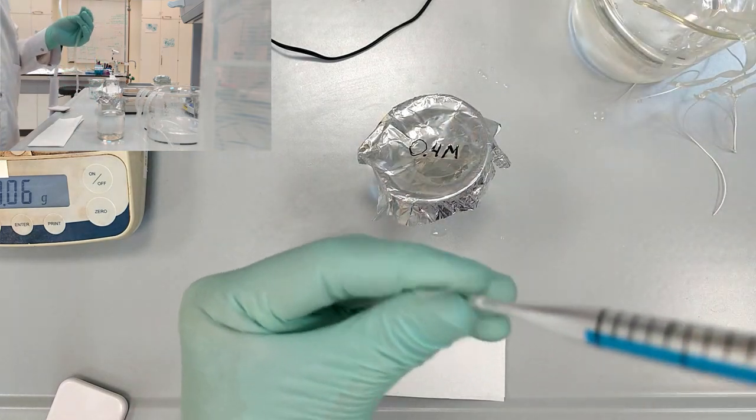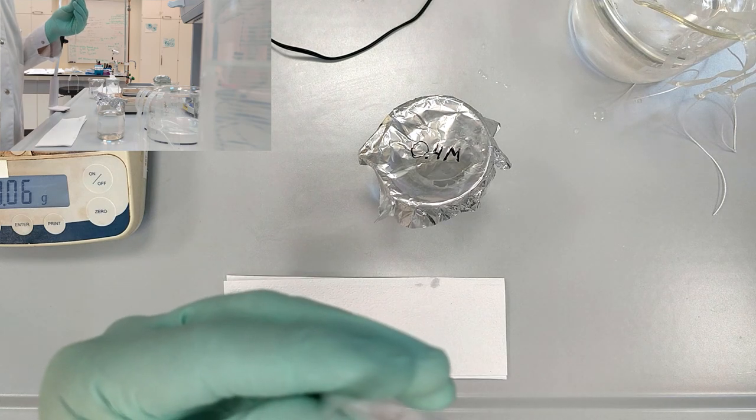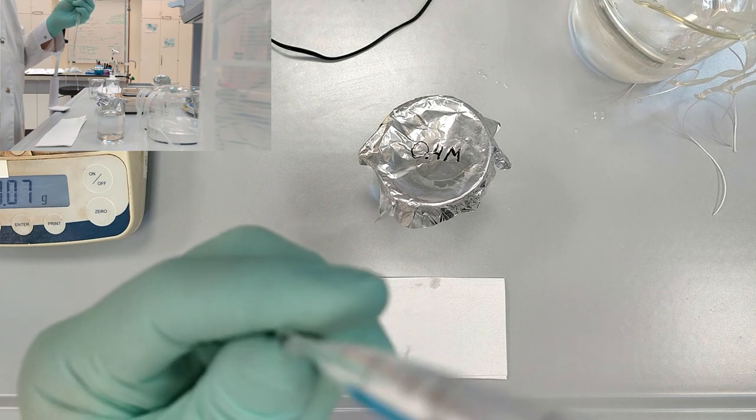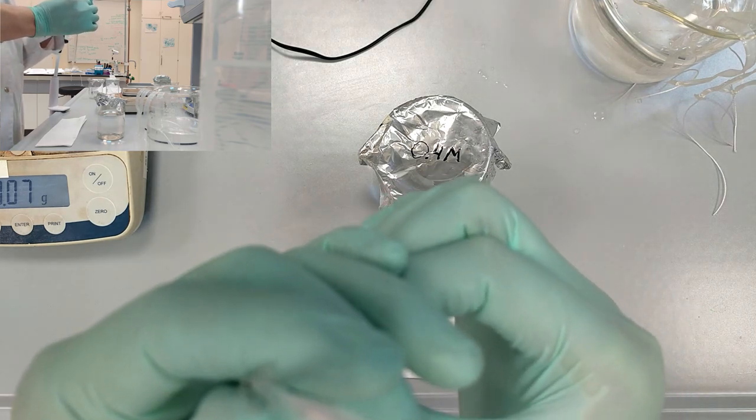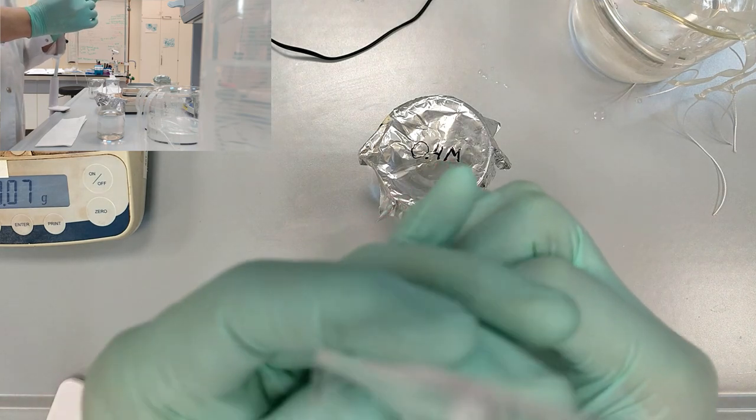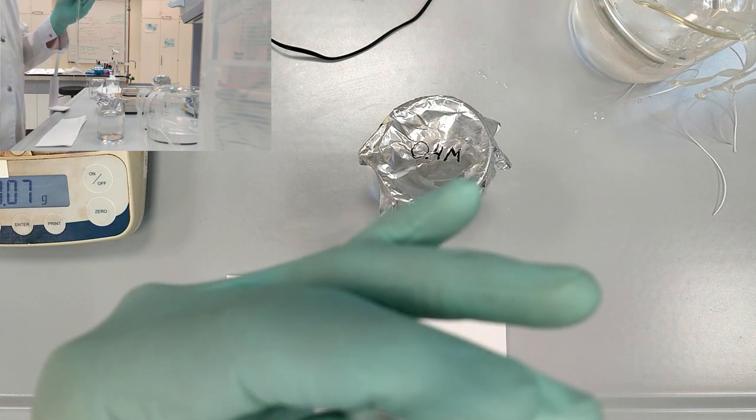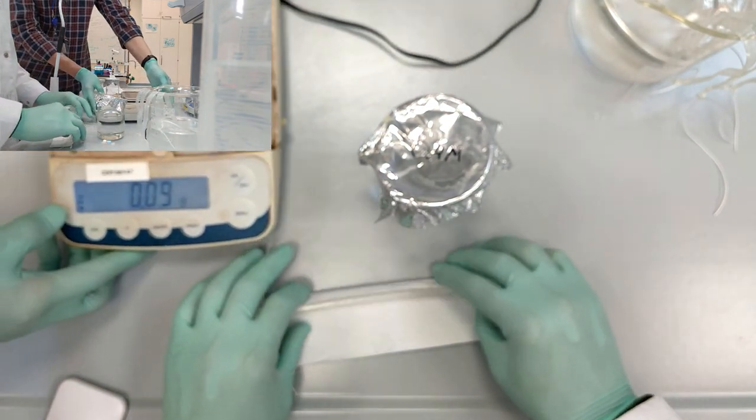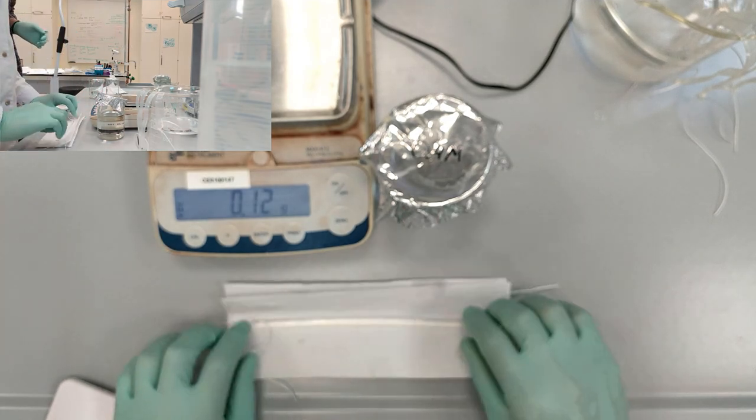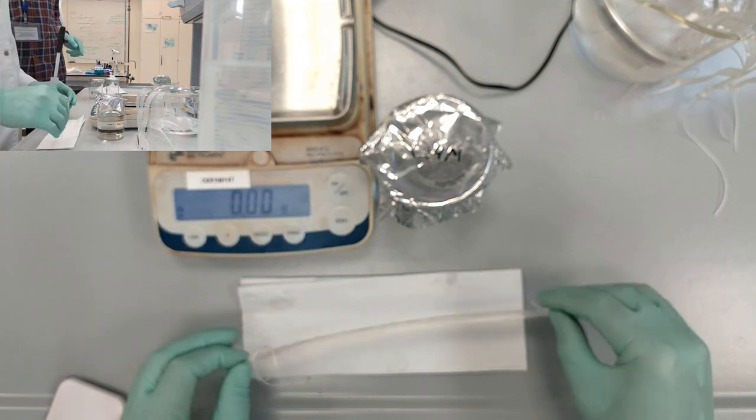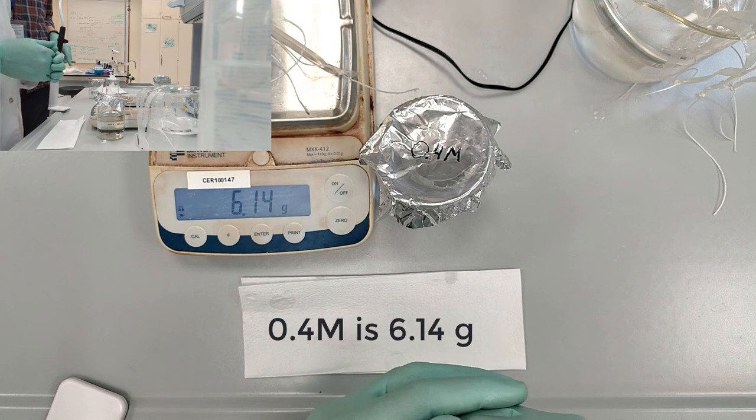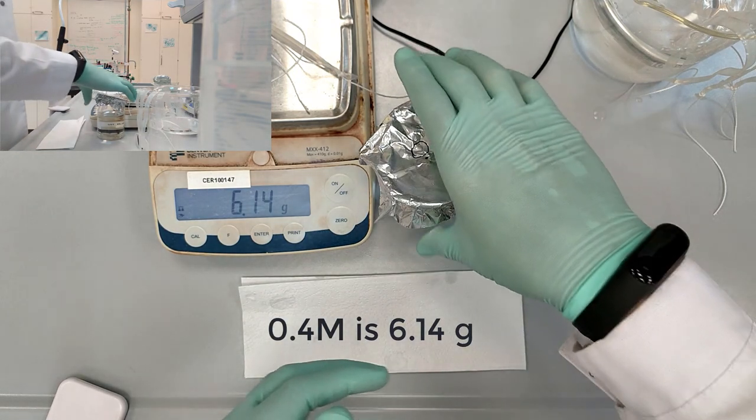Put the dialysis tube, close the open side. Make sure it's dry. Zero the level of the scales and place it on the platform. So for 0.4 molar concentration the mass is 6.14 grams.